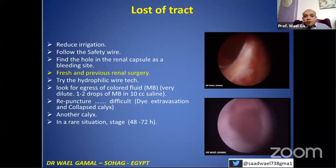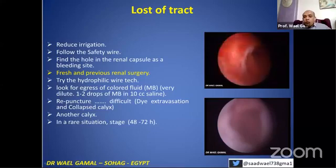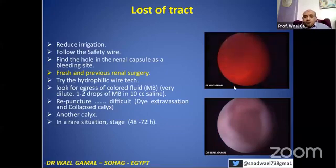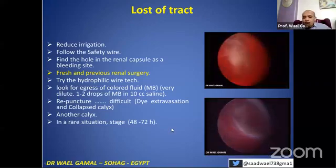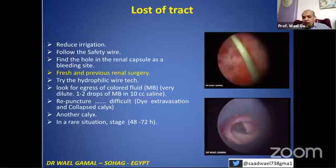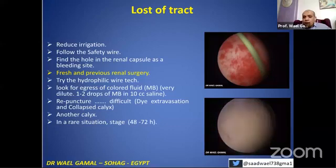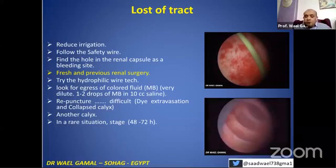What is the difference between lost track in cases with previous renal surgery versus cases without? This is one of the advantages of previous renal surgery — you can enter very easily inside the collecting system in case of lost track. However, in fresh cases, it is sometimes difficult. The tissue is soft and once you are outside, it collapses very easily and you may not be able to find your track.